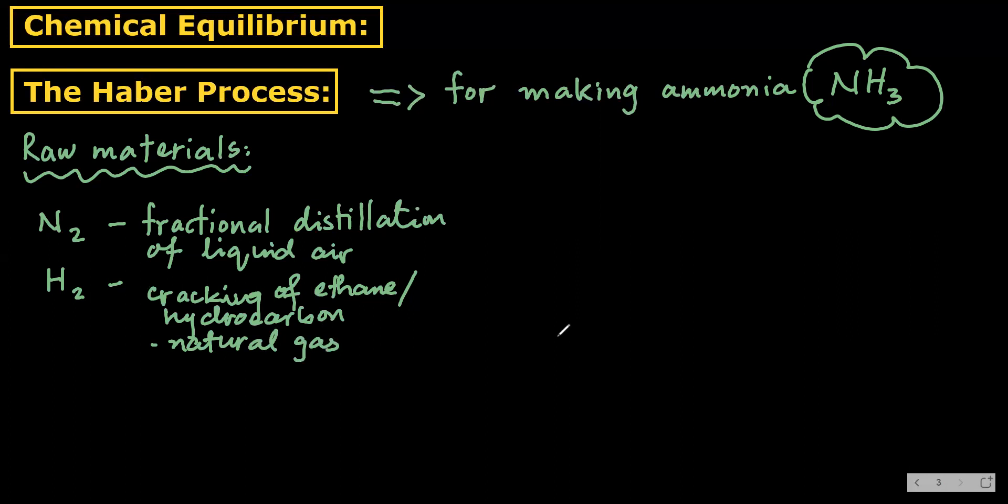What is the main equation for ammonia? That is N2 plus 3H2, both gases, forming a reversible reaction, producing 2NH3. This is our balanced equation. The forward reaction is exothermic, and the backward reaction is endothermic.